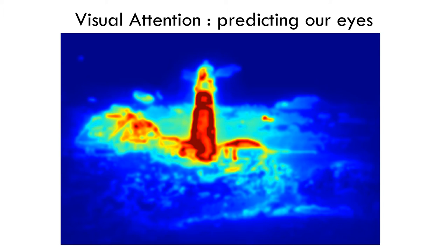In addition to analyzing people's eye direction, what you can do is make models which will automatically predict where people will look. What we can see here is called a saliency map — a map with pixels which will tell you that there is a high probability for the average viewer to look here, while other pixels tell you the probability to look there is very low, because the information there is not very important.